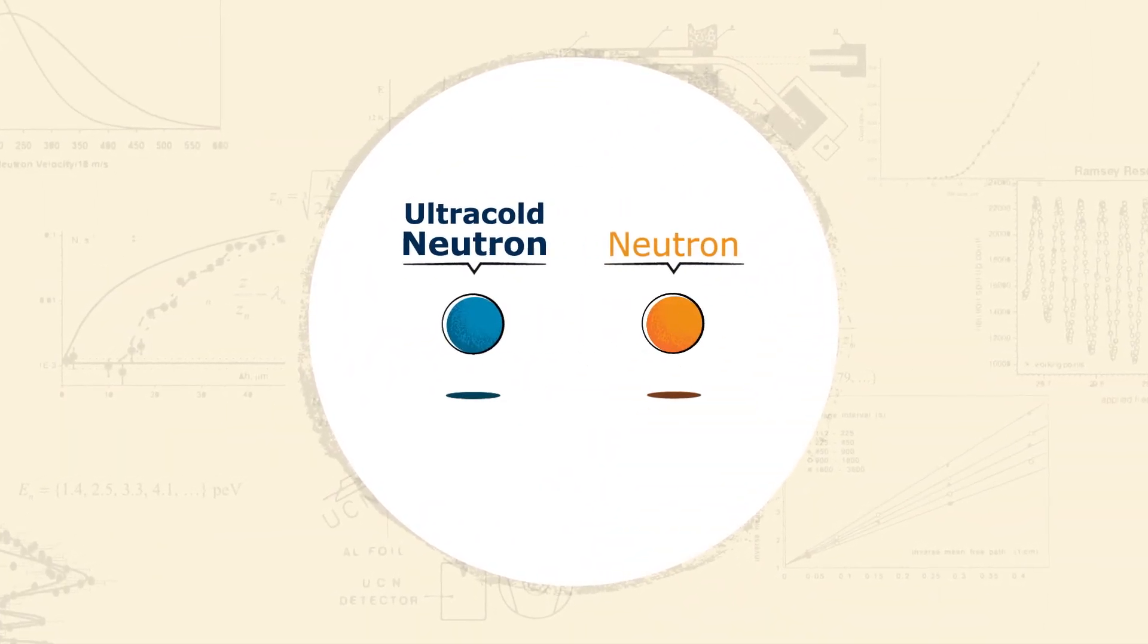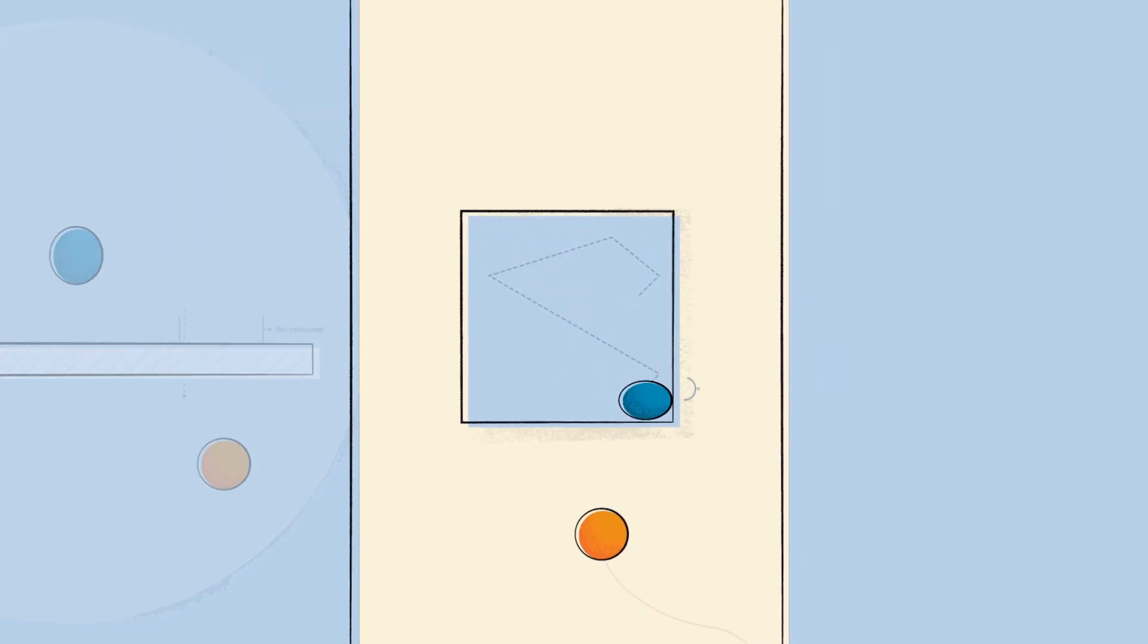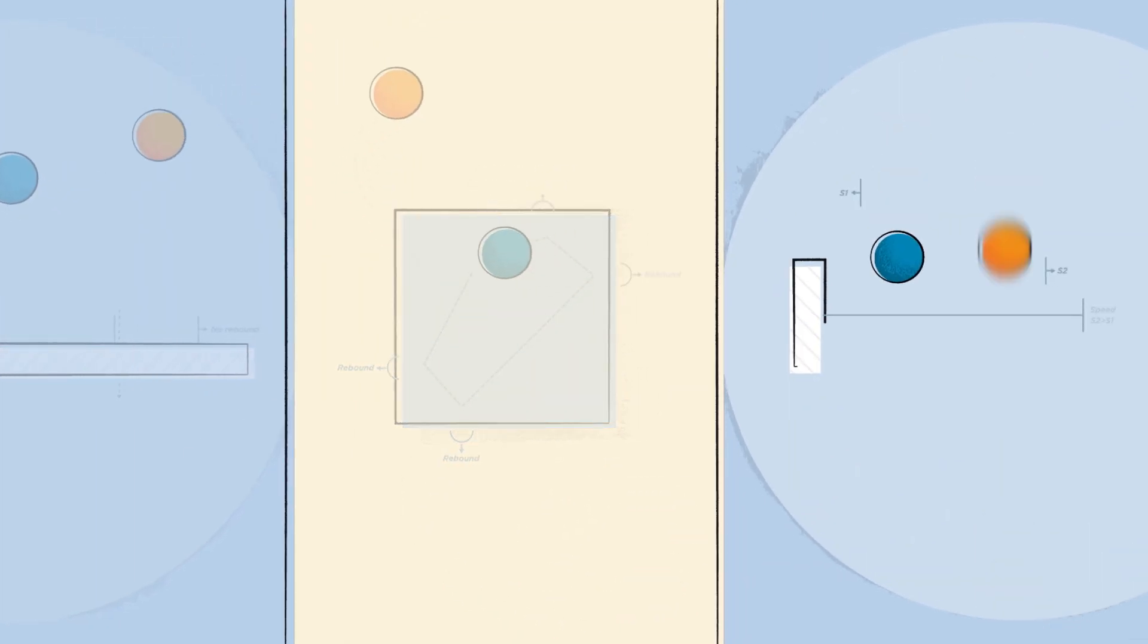A neutron with low energy, capable of bouncing off matter, and therefore, of being stored and observed over long periods.